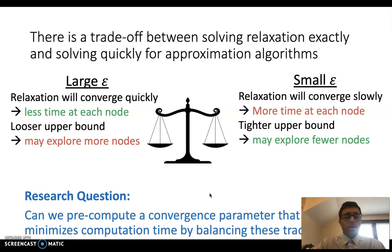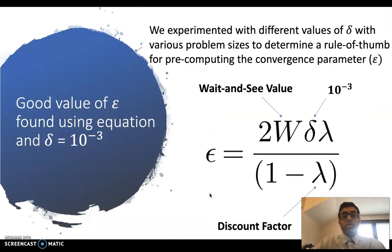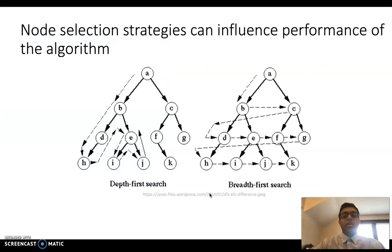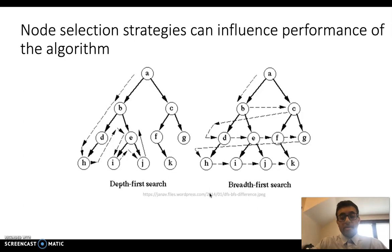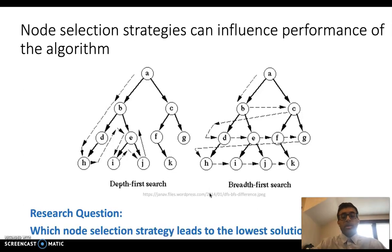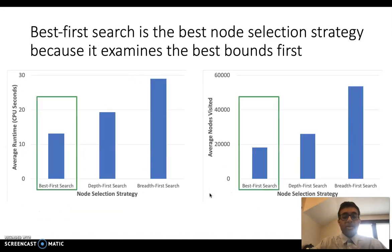So can we pre-compute a convergence parameter that minimizes computation time for these approximation algorithms? We experimented with different values and found that when delta was 10 to the negative 3, we minimized computation time. Additionally, node selection can influence algorithm performance. Depth-first search goes all the way to the bottom of the tree before coming back up, while breadth-first search looks at all nodes on a given level before going deeper. We found that best-first search, which employs a priority queue and looks at nodes with the highest upper bounds, was the best in terms of runtime.